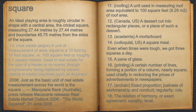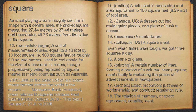10. Real estate jargon, a unit of measurement of area, equal to a 10 foot by 10 foot square, i.e., 100 square feet or roughly 9.3 square meters, used in real estate for the size of a house or its rooms, though progressively being replaced by square meters in metric countries such as Australia. For example, 2006, just as the basic unit of real estate measurement across the world is the square. Macquarie Bank, Australia, press release Macquarie Releases Real Estate Market Outlook 2006, the world squared, the 21st of June 2006.